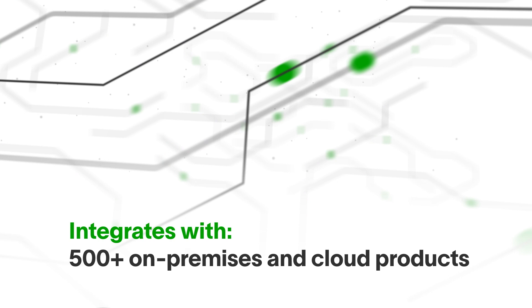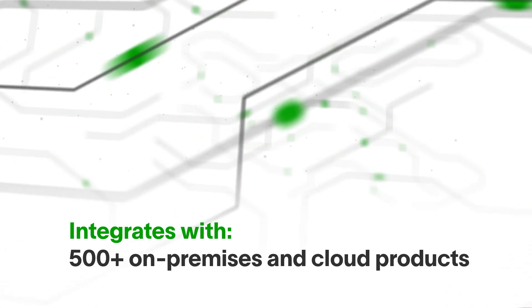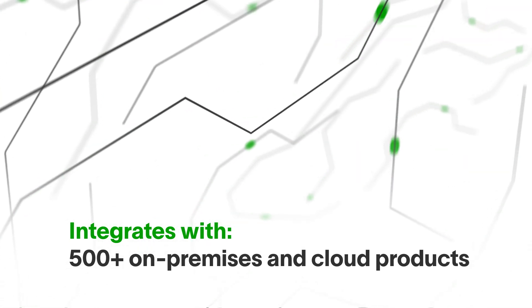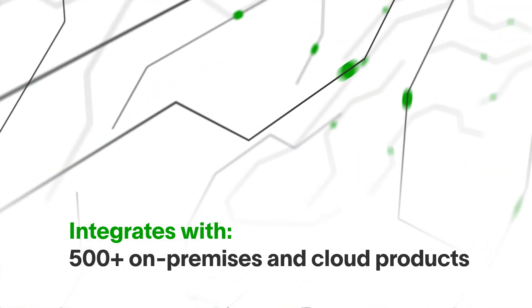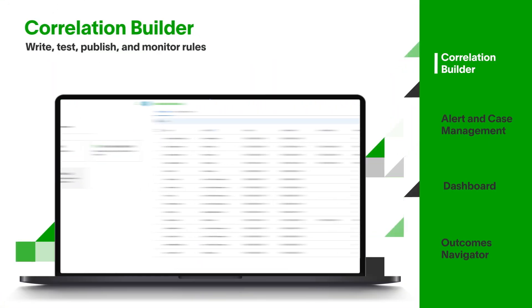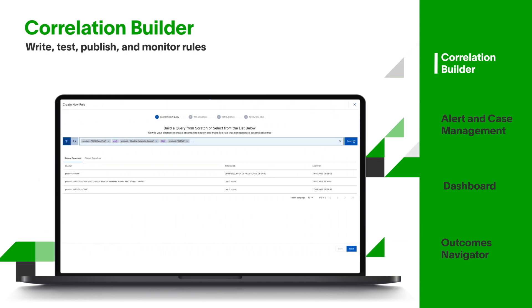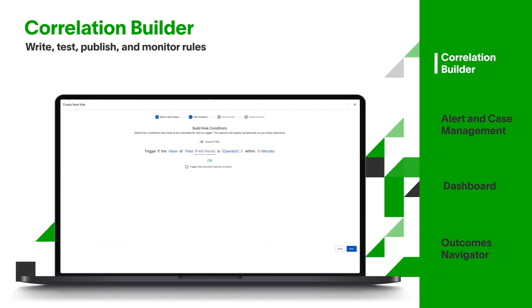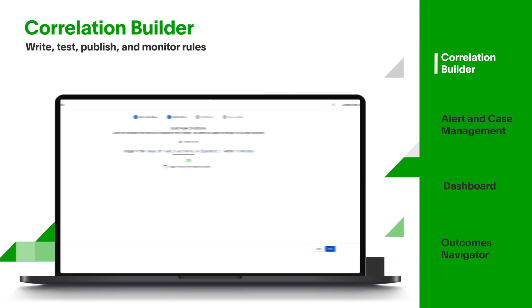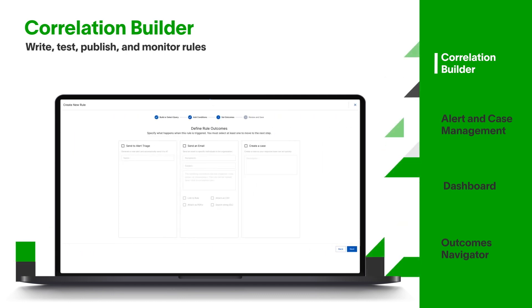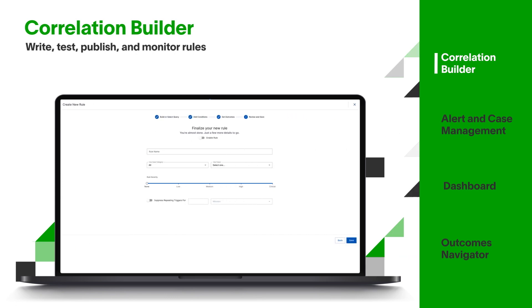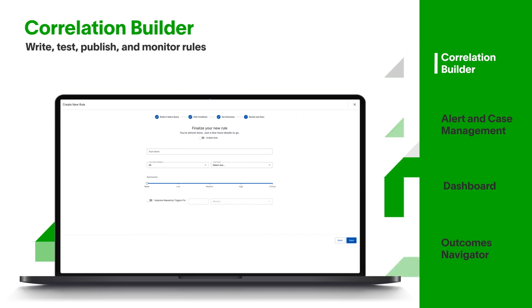Exabeam securely collects data at scale, supporting hundreds of on-premises, cloud security, and cloud infrastructure products. A correlation builder lets you write, test, publish, and monitor custom rules, including defining higher criticality identified by threat intelligence. There are 100-plus pre-built correlations, or you can easily create custom correlation rules suited to your environment or use case needs.